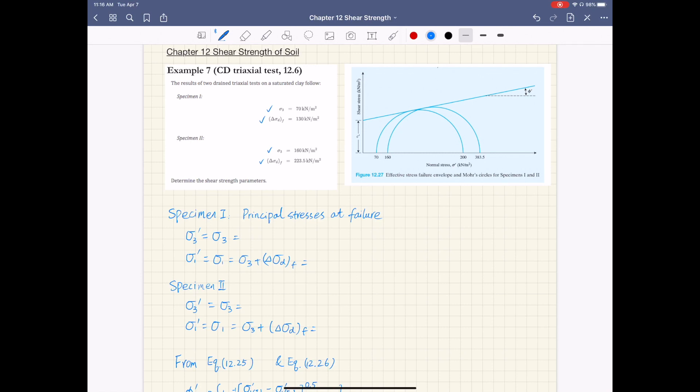If you look at this Mohr circle at failure, there are two Mohr circles, one for each specimen. And the Mohr-Coulomb failure envelope is also given to you. So this is fitted to the two Mohr circles at failure.